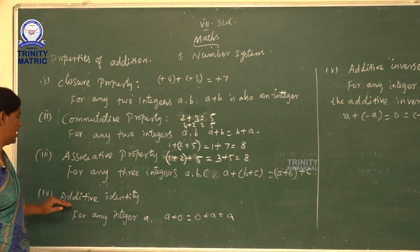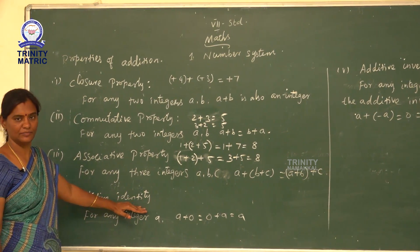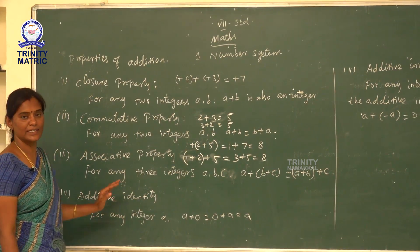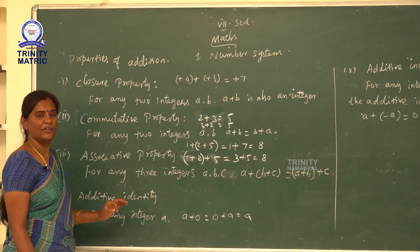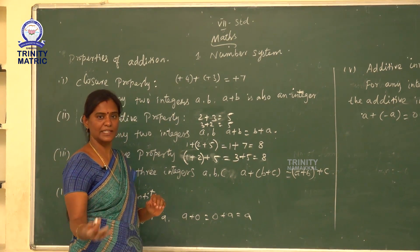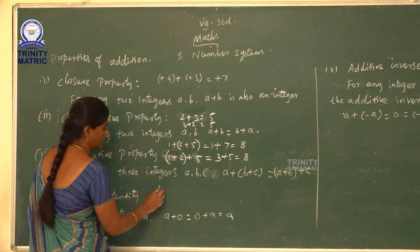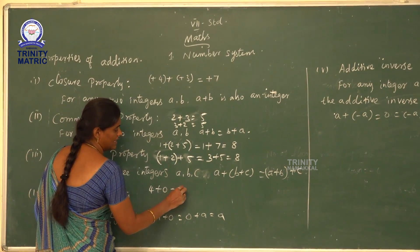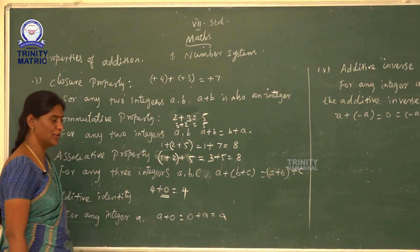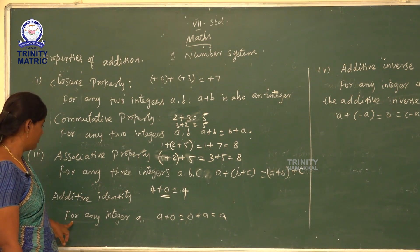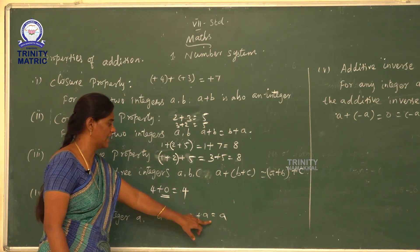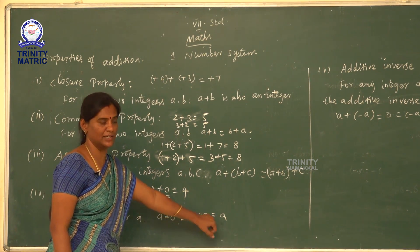Then, additive identity. Additive identity is nothing but zero. When we add zero with any integer, the answer will be the same number. For example, 4 plus 0 equals 4. In general form, for any integer a: a plus 0 or 0 plus a equals a.